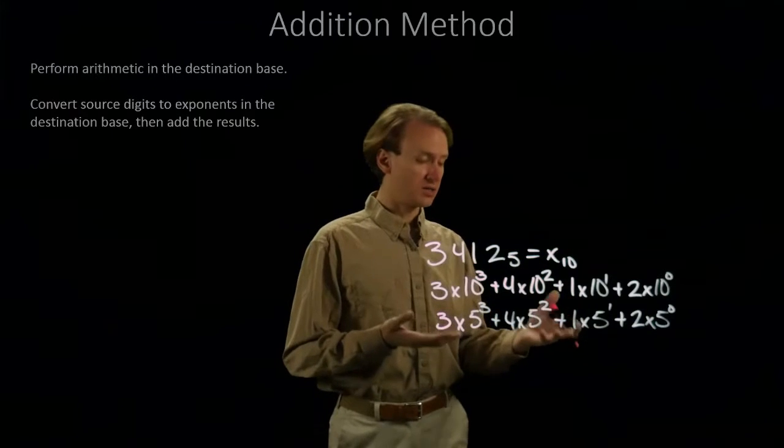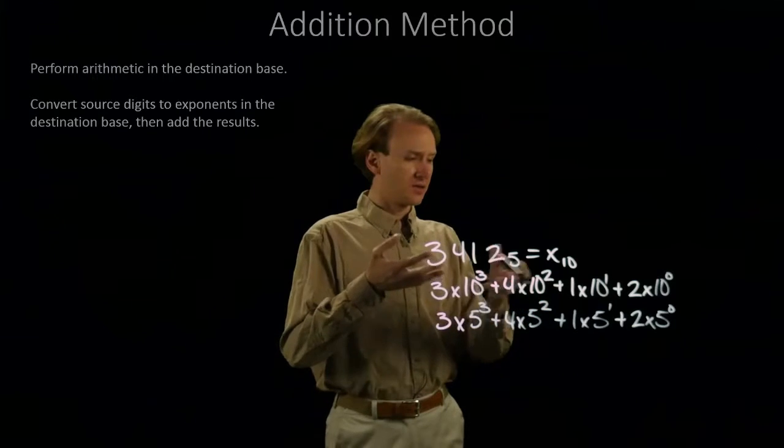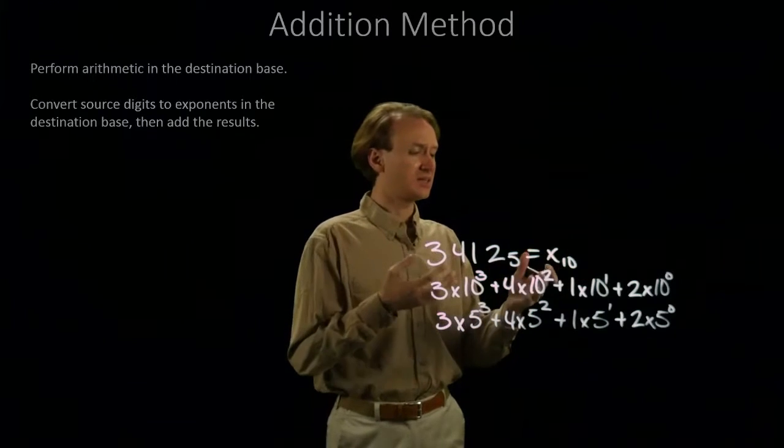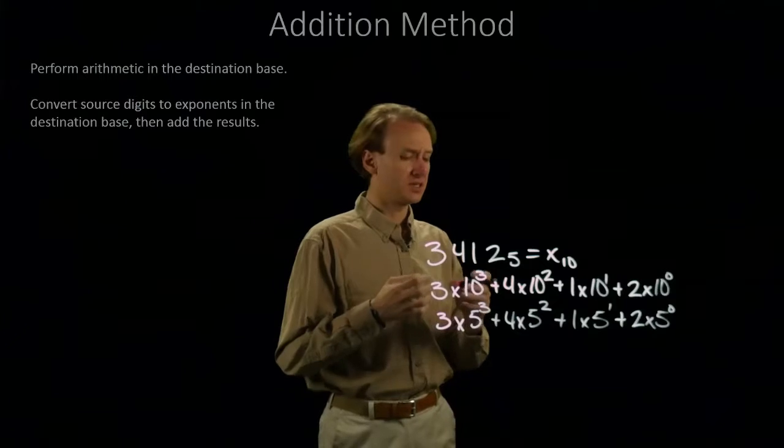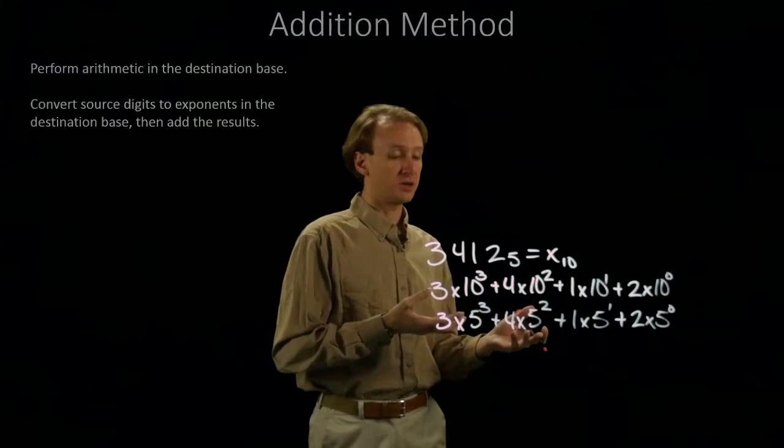Now I've got something that's all in decimal, and this I can do arithmetic on. The things up here were intermediate stages where each piece of this needed to be converted until it was in decimal and I could do the arithmetic on it.